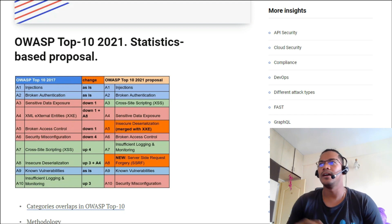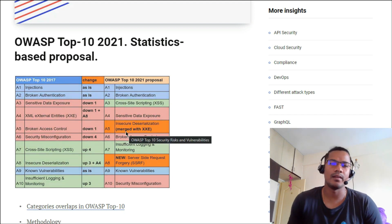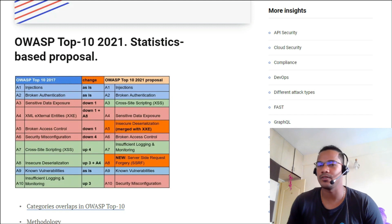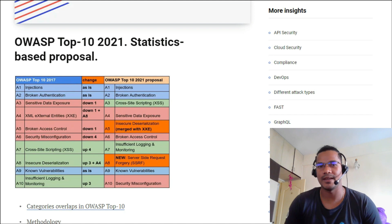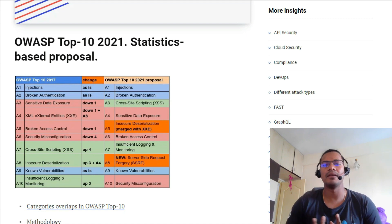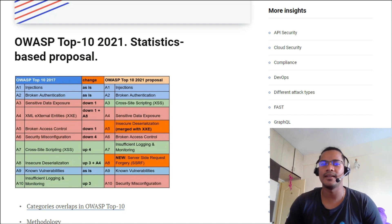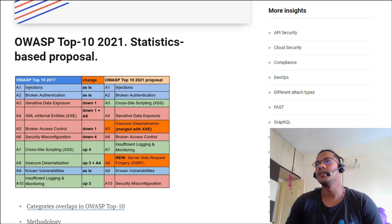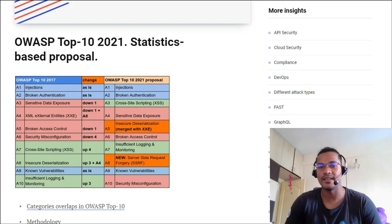I have a blog URL which I'll put in the description box — you can go ahead and check that. We'll be talking first about OWASP Top 10 2017, which is still the valid one, and then the proposal for OWASP Top 10 2021. Typically every three or four years, OWASP releases or updates their Top 10 guidelines.